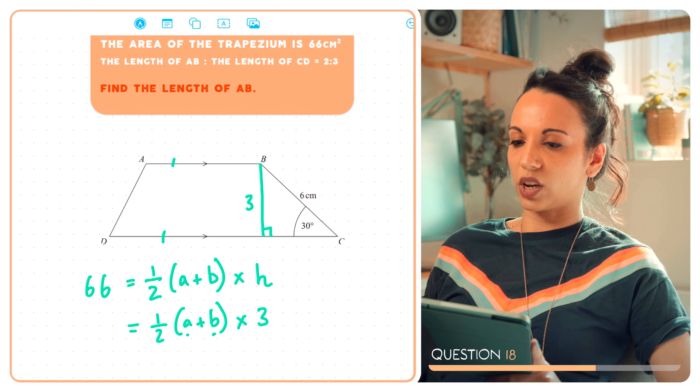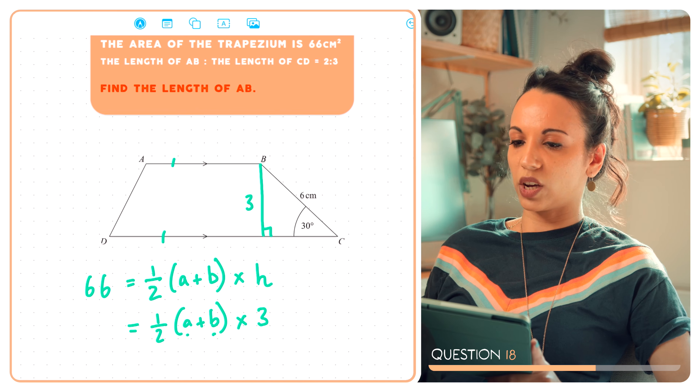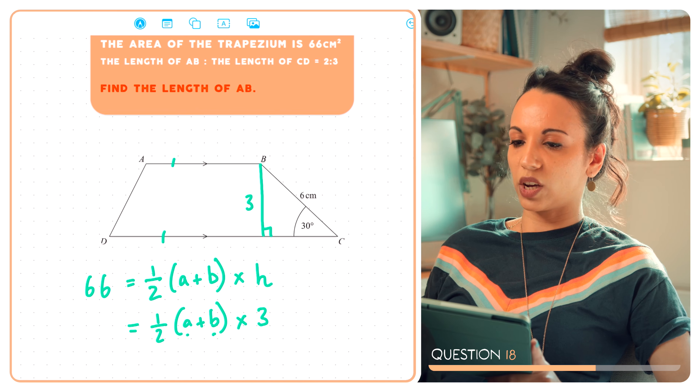So the formula gives us half times (a plus b) times 3 equals 66. The ratio of AB to CD is 2 to 3, so we call AB equal to 2x and CD equal to 3x. Substituting into the formula: half times (2x plus 3x) times 3 equals 66, which simplifies to half times 5x times 3 equals 66.